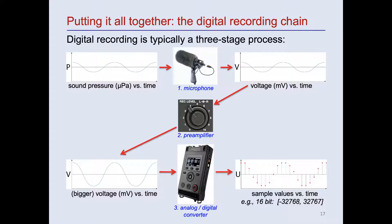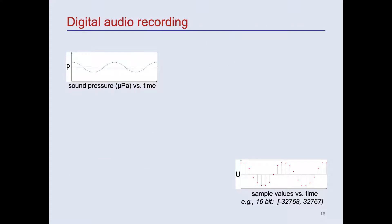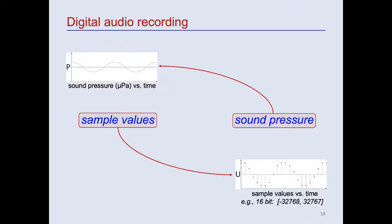Finally, in the third stage, a device called an analog-to-digital converter, or ADC, or a digitizer, samples the voltage waveform. The output of the digitizer is a series of integer sample values, typically at rates of tens or hundreds of thousands of samples per second. These sample values are then saved into a digital file. To summarize, the digital recording process starts with sound pressure in the real world and results in digital sample values saved into an audio file.